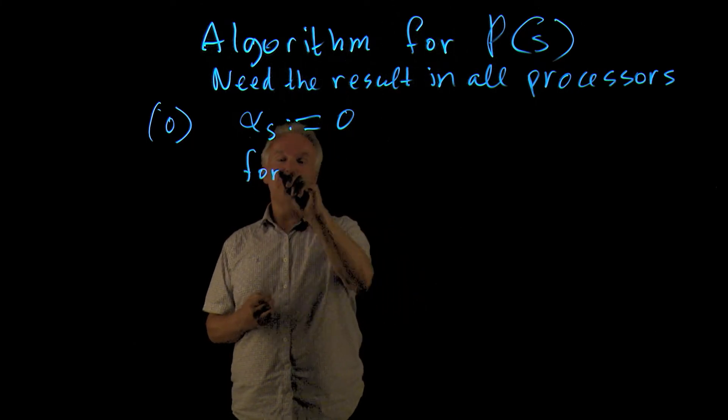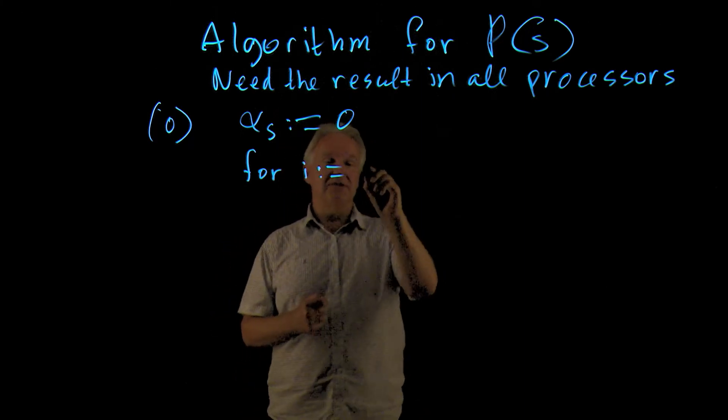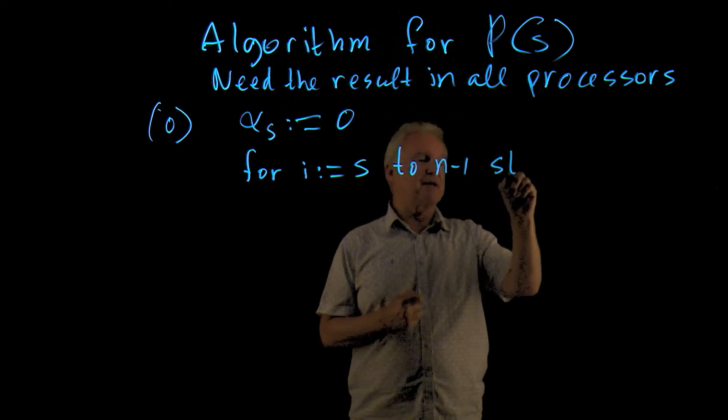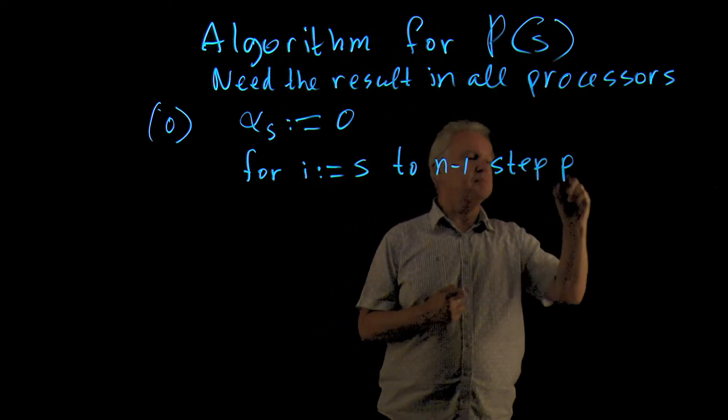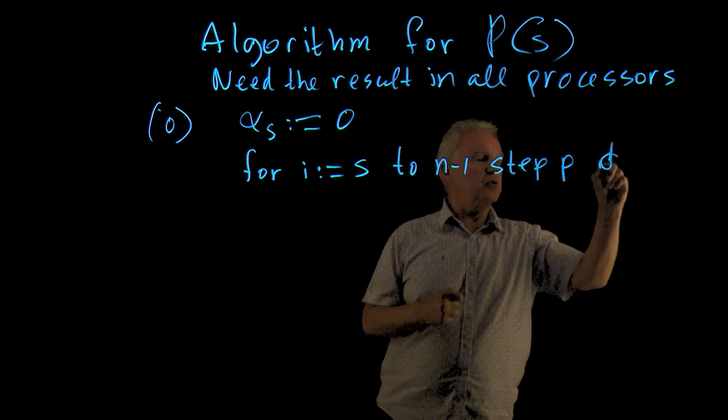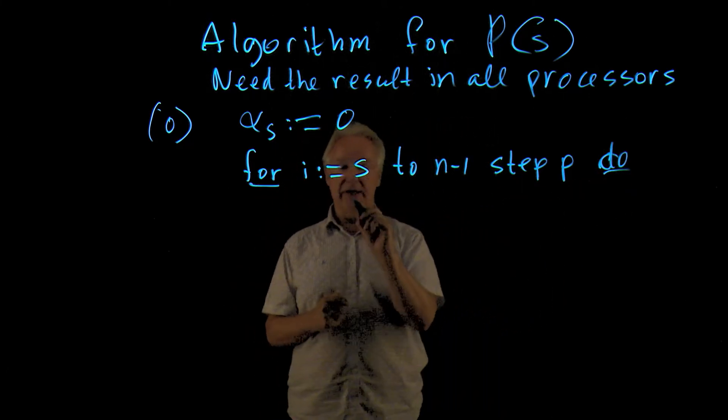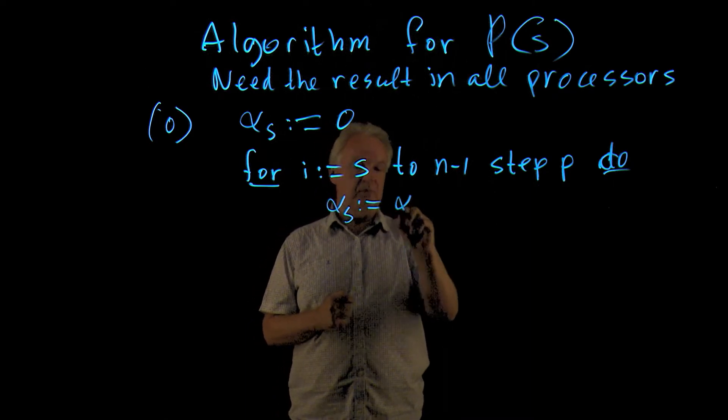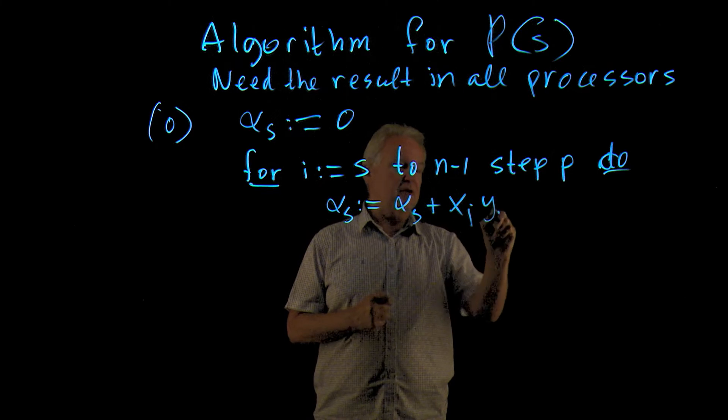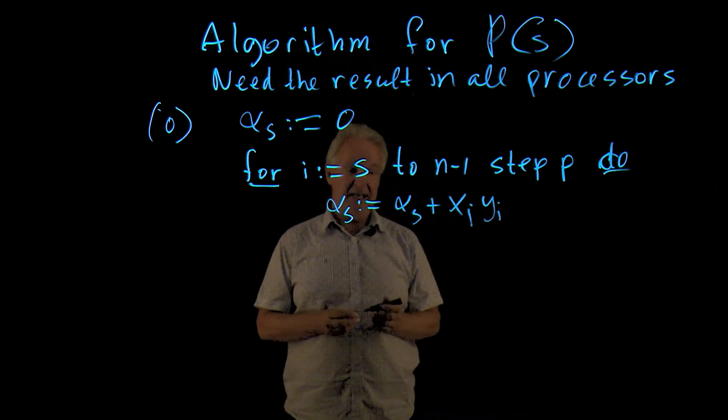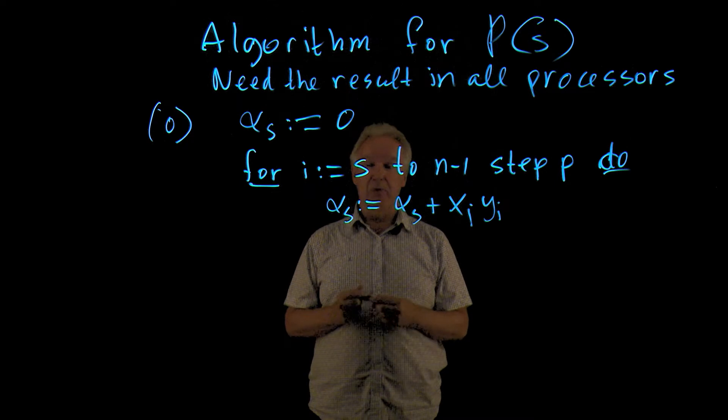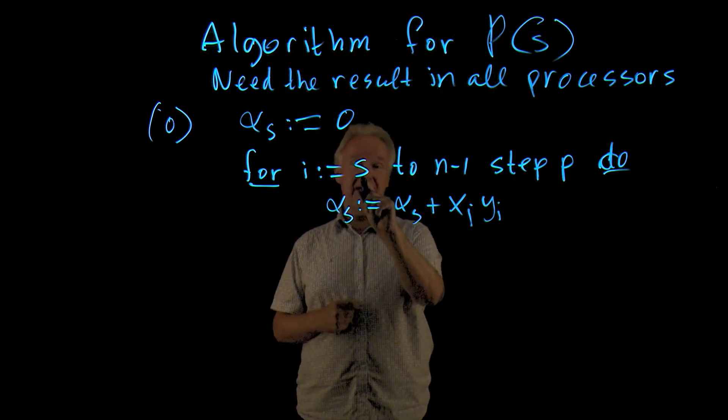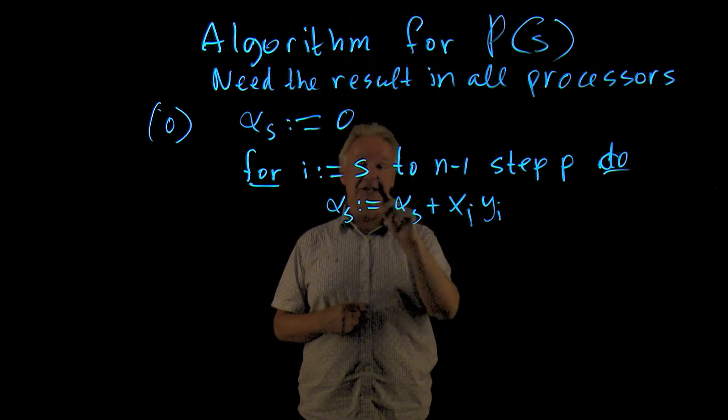And then we go through all the elements, starting at S, to n minus 1, step P. We do the following. We add to alpha S the product of xi and yi.